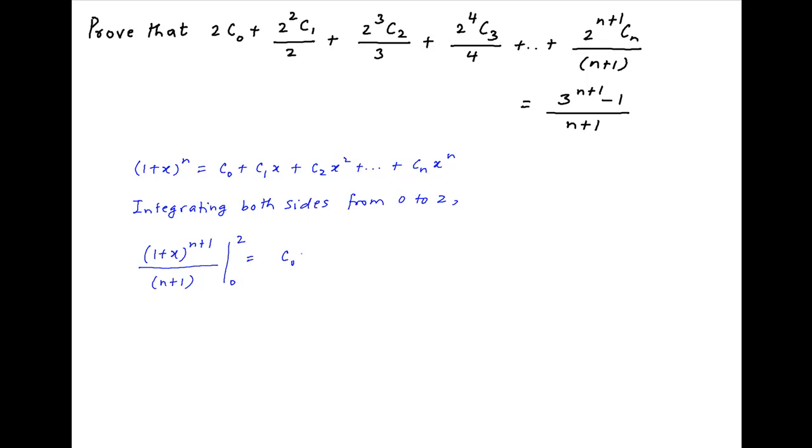And the right-hand side is equal to c0x plus c1x squared upon 2 plus c2x cubed upon 3 plus and so on, plus cn times x raised to the power n plus 1 upon n plus 1, between the limits 0 and 2.